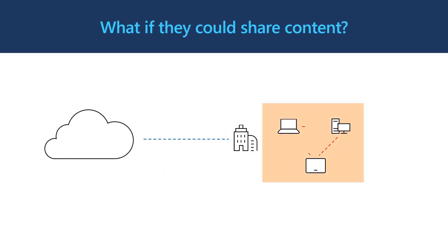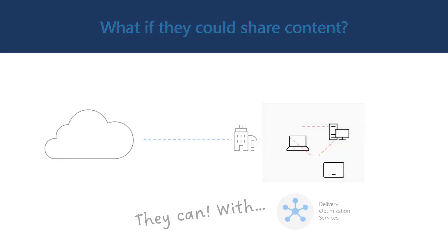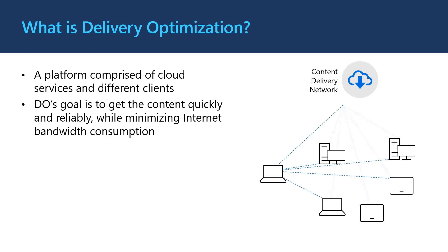So wouldn't it be great if they could share that content? Well, lucky for you, Microsoft has developed a technology in Windows called Delivery Optimization that does just that. Delivery Optimization is a platform that includes a combination of cloud and client-side components. The goal of Delivery Optimization is to optimize the download of content so that it can be downloaded reliably and also utilize local sources where possible to reduce internet bandwidth consumption.